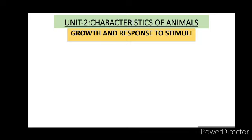Some characteristics of animals that we know: they breathe, they move from one place to another, they are heterotrophs — they cannot prepare their own food. They depend directly or indirectly on plants for their food. They reproduce to increase their number, they excrete, and they have sensitivity. These are all characteristics of animals.